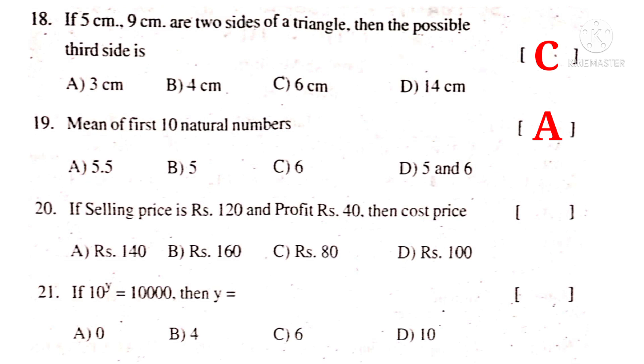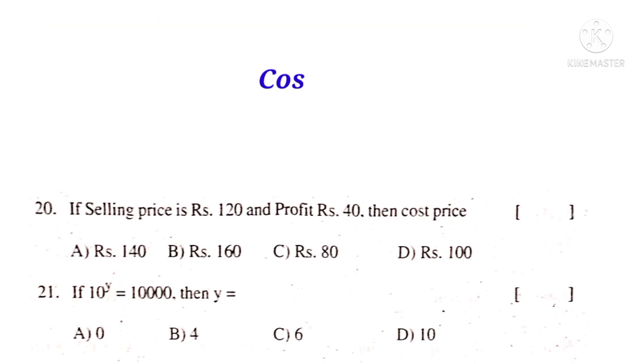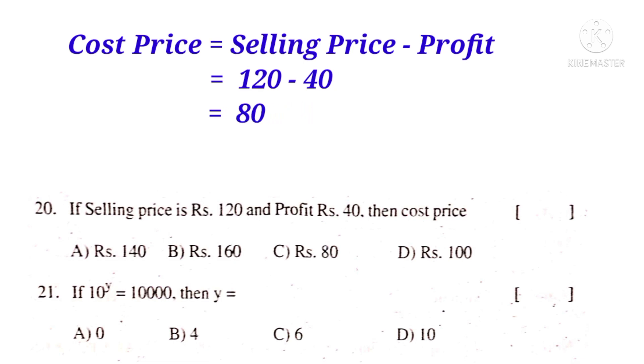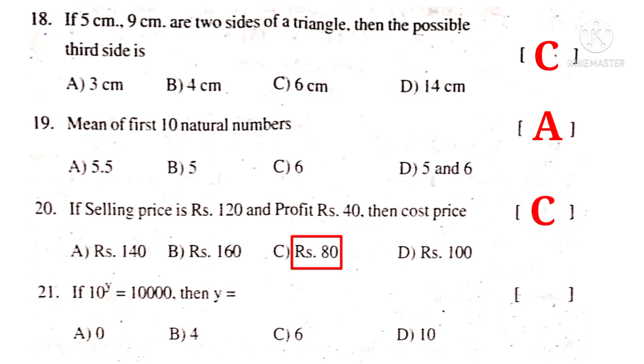20. If selling price is 120 and profit is 40 rupees, then cost price is. Cost price is equal to selling price minus profit, that is 120 minus 40, which gives 80 rupees. So the correct choice is C.